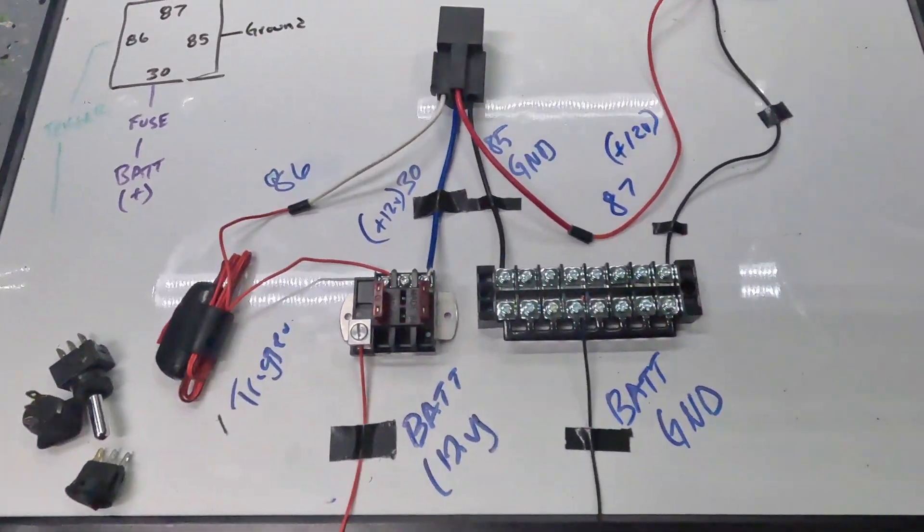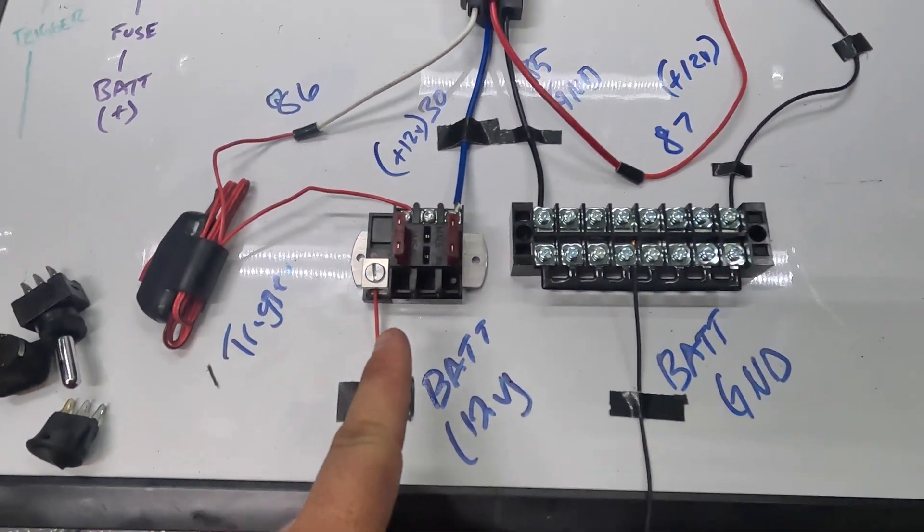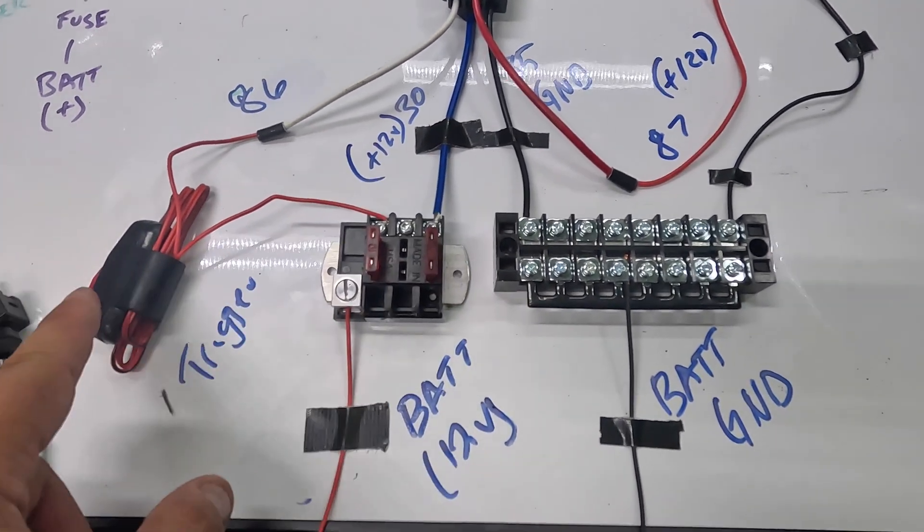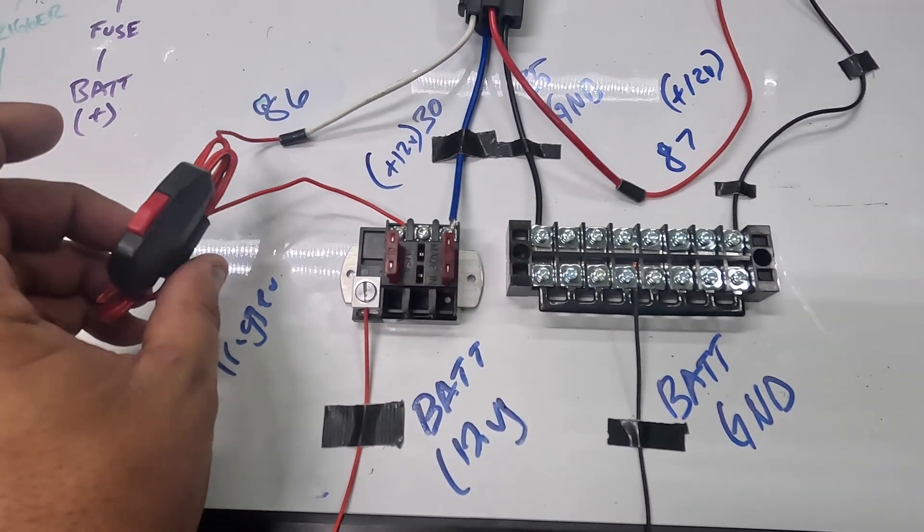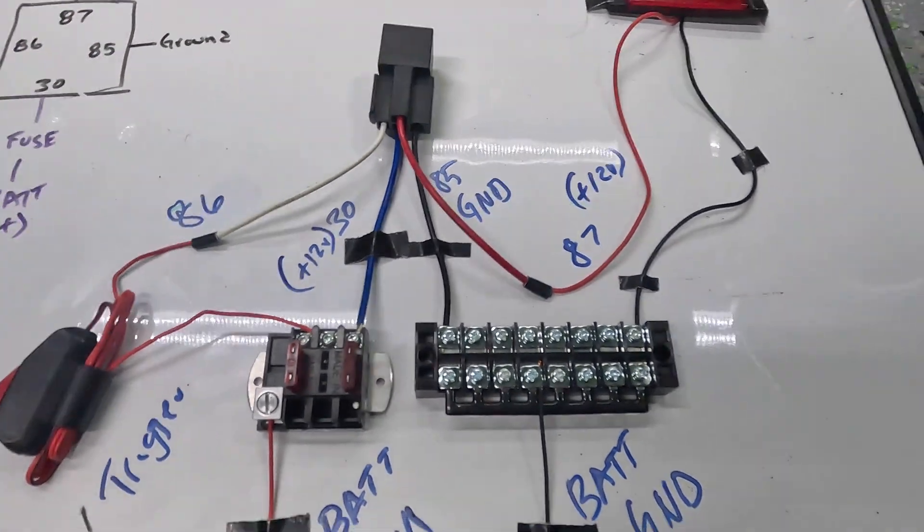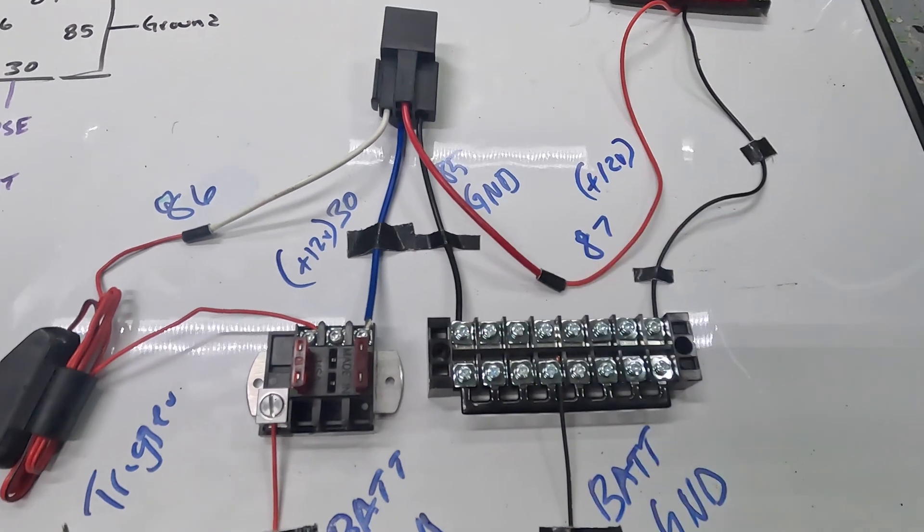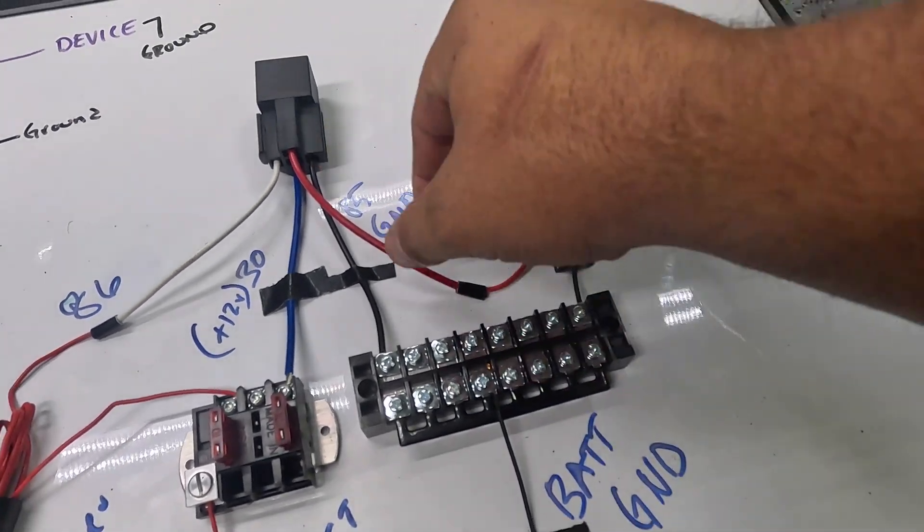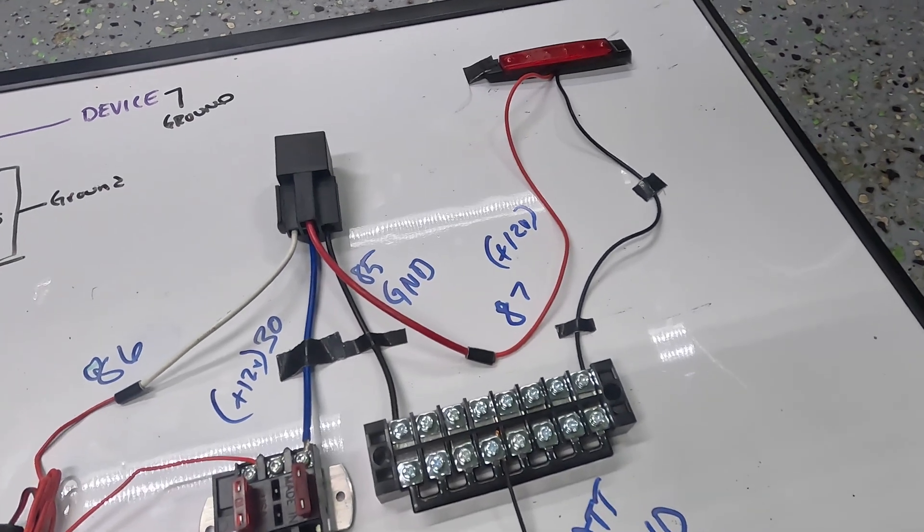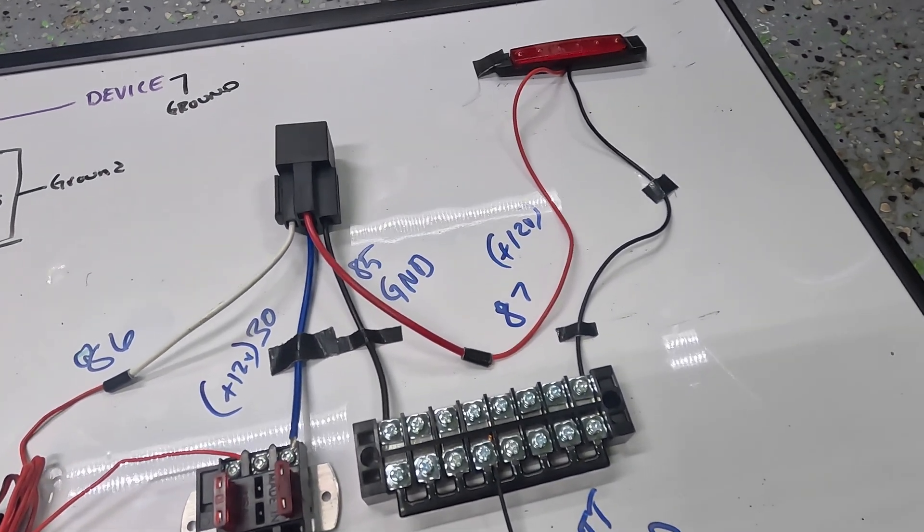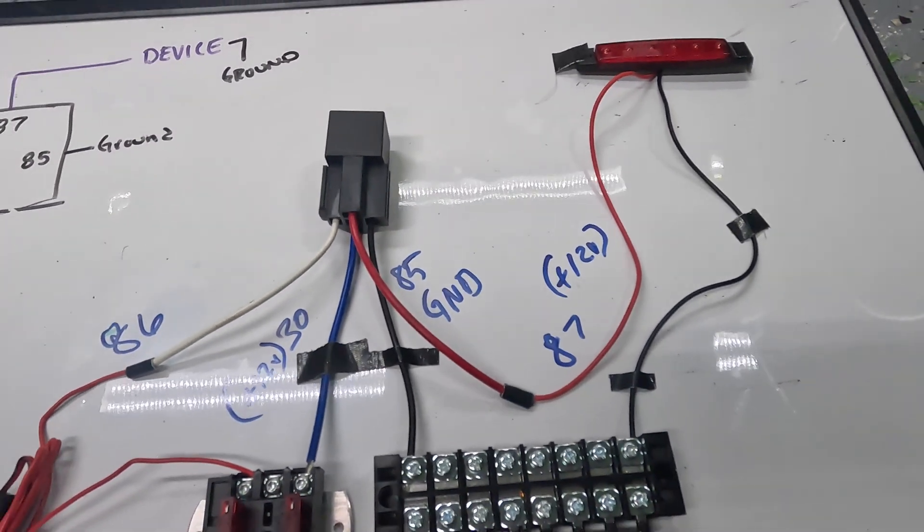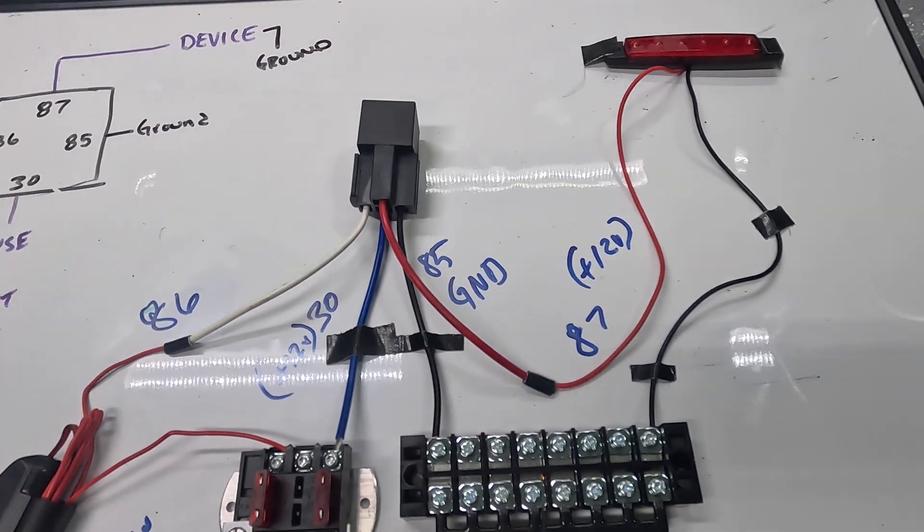So really quickly once again. You have your battery which is fused, that's going to go to pin 30. You have your trigger, which is going to be your 12 volt source, going to pin 86 on the relay. 85 which is the black wire here is ground. And then 87 is output. So in this case it is a red light. That could be a fuel pump, that could be a cooling fan, really anything that needs to be driven separately on an isolated circuit.